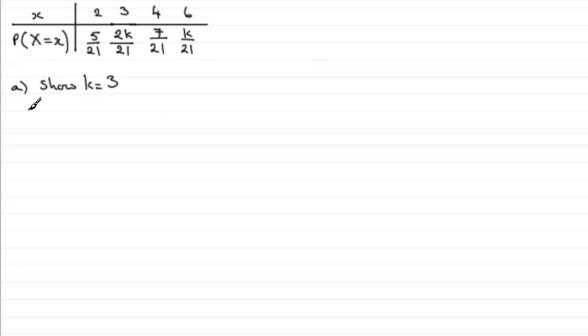So what we need to do is just add those up. So we've got 5 over 21 plus 2k over 21 plus 7 over 21 plus k over 21 equals 1. And we could multiply through by 21 at this stage and we would have 5 plus the 7 which is going to be 12.